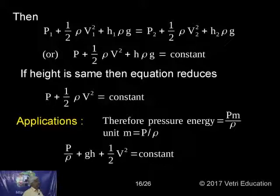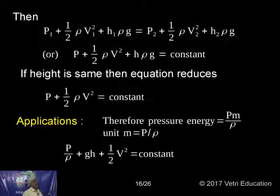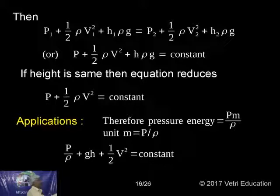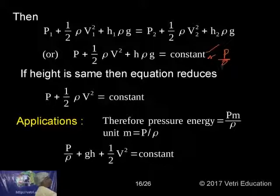Kinetic energy is half mV squared; per unit mass simply half V squared, along with density. Mass divided by density gives volume; mass per volume equals density. So I modified this M. P by rho plus half V squared plus GH equals constant — both forms are the same. If you multiply throughout by rho, automatically the formula becomes P plus half rho V squared plus rho GH equals constant.